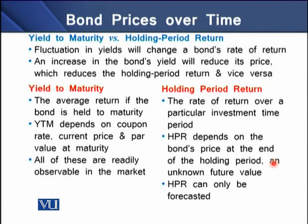For yield to maturity, all required values — current price, coupon rate, and par value at maturity — are readily available in the market. For the holding period rate of return, however, such values can only be forecasted.